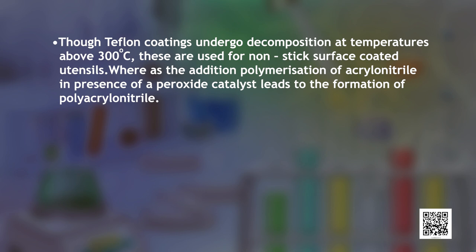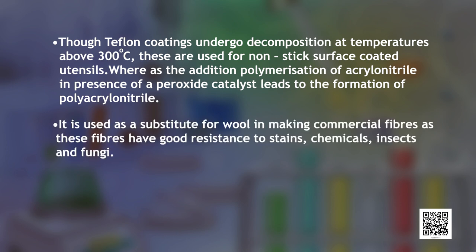The addition polymerization of acrylonitrile in the presence of a peroxide catalyst leads to the formation of polyacrylonitrile. It is used as a substitute for wool in making commercial fibers, as these fibers have good resistance to stains, chemicals, insects and fungi.